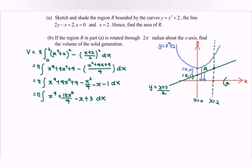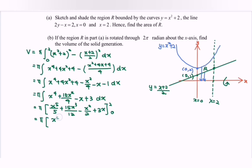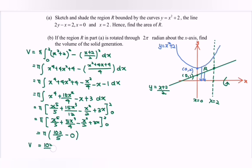Integrating: π [x⁵/5 + 5x³/4 − x²/2 + 3x] from 0 to 2. Substituting x = 2 gives 102/5; substituting x = 0 gives 0. So the volume is 102π/5 cubic units.